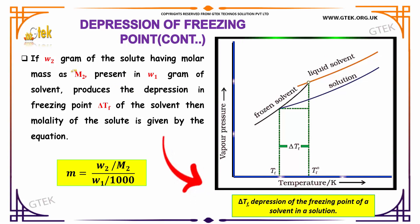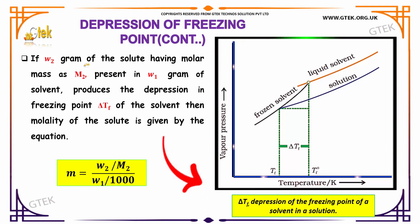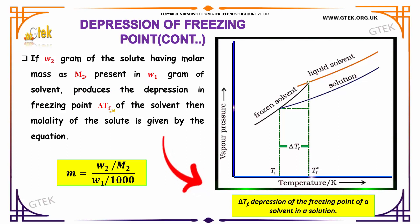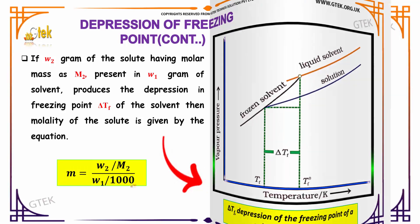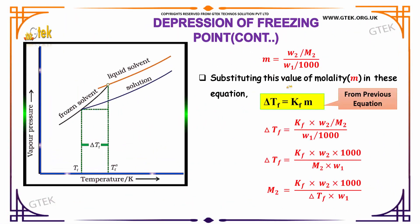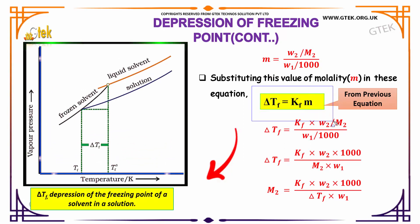If w₂ grams of a solute having molar mass M₂ is present in w₁ grams of solvent, which produces a depression in freezing point ΔTf of the solvent, then the molality of the solute is given by the equation: m = (w₂ / M₂) / (w₁ / 1000).